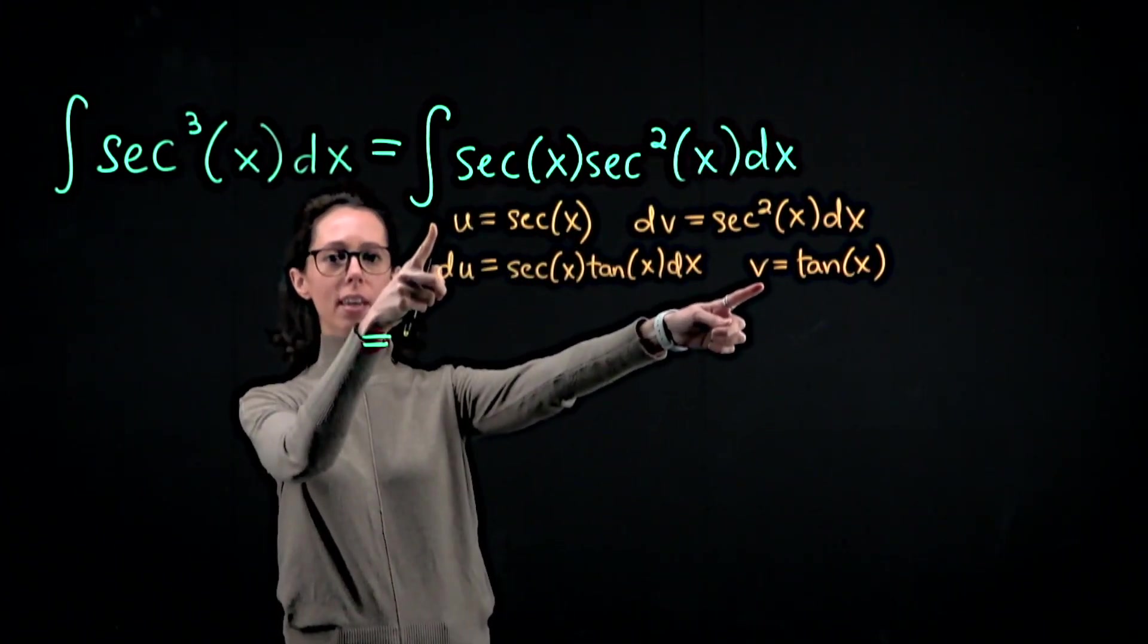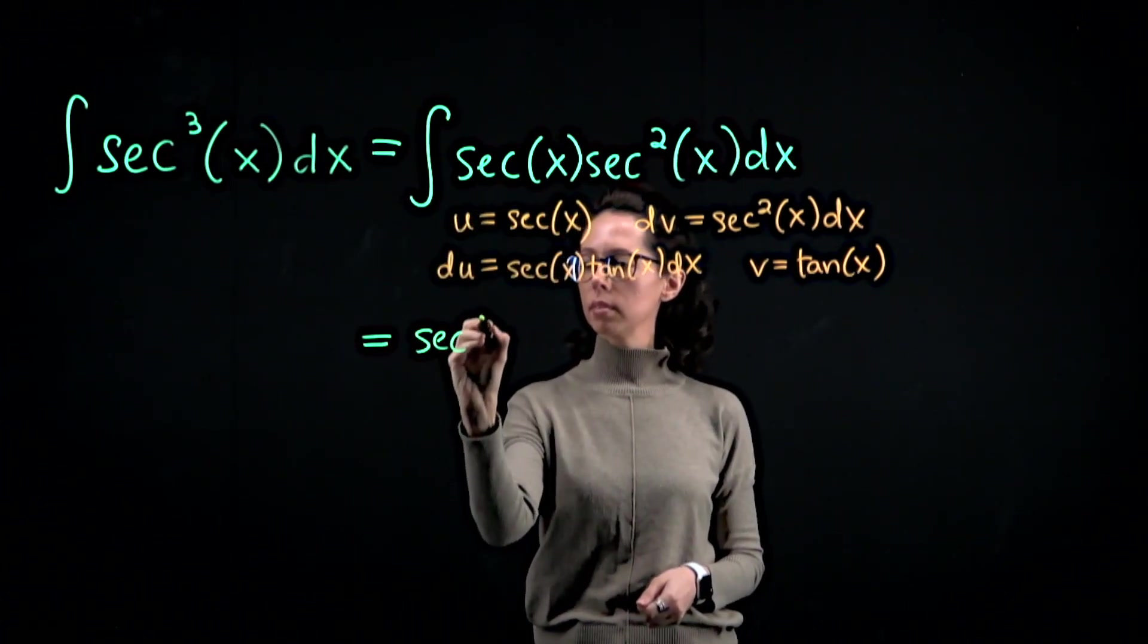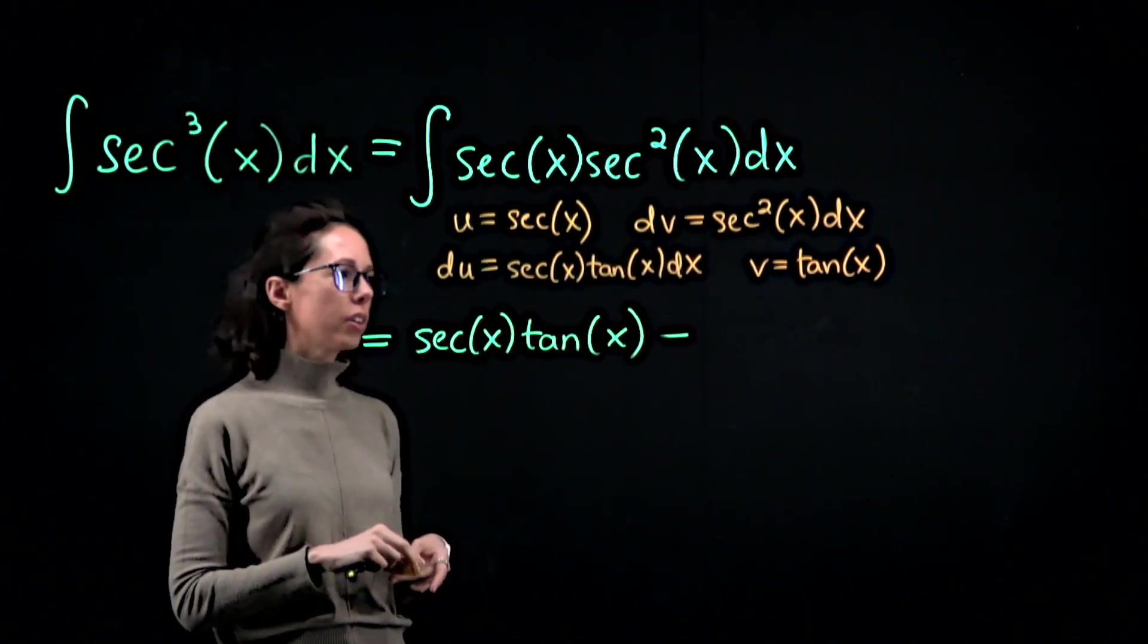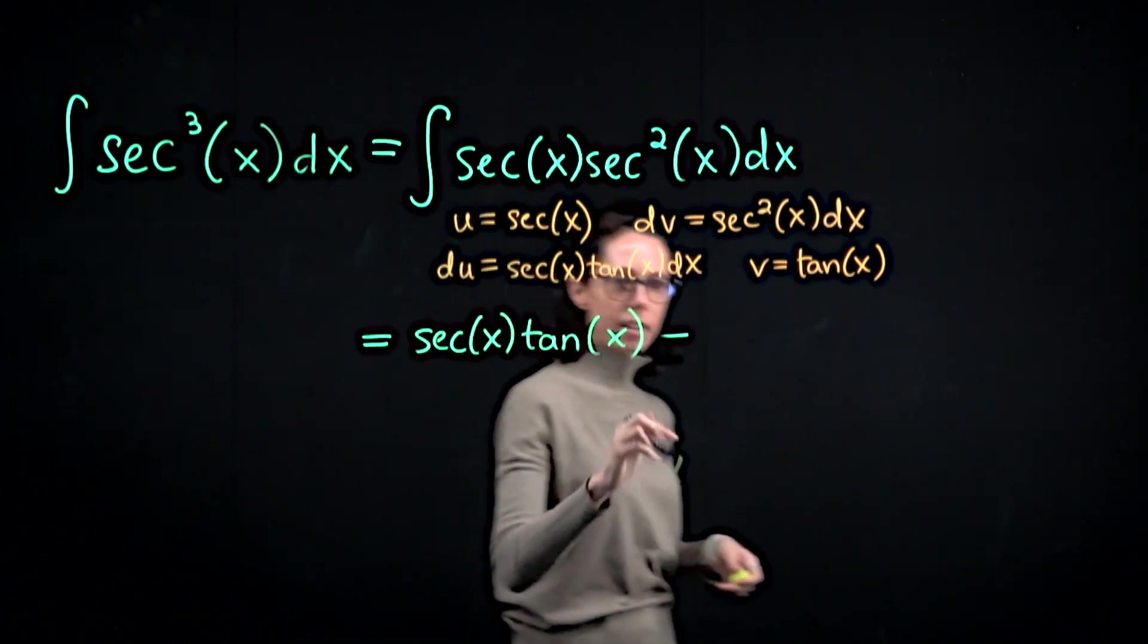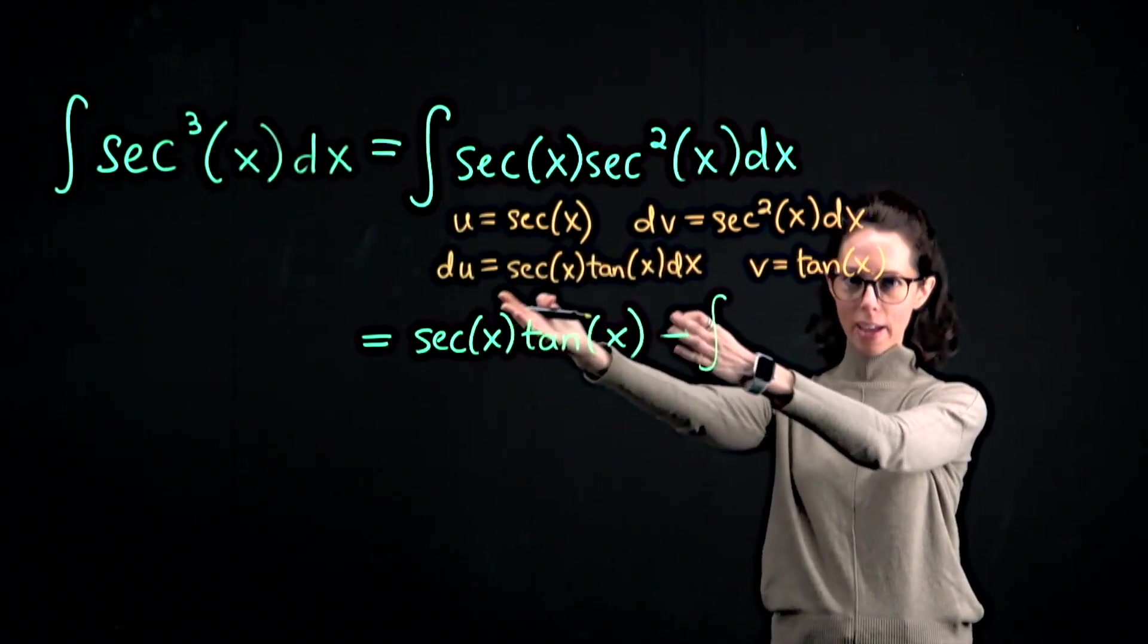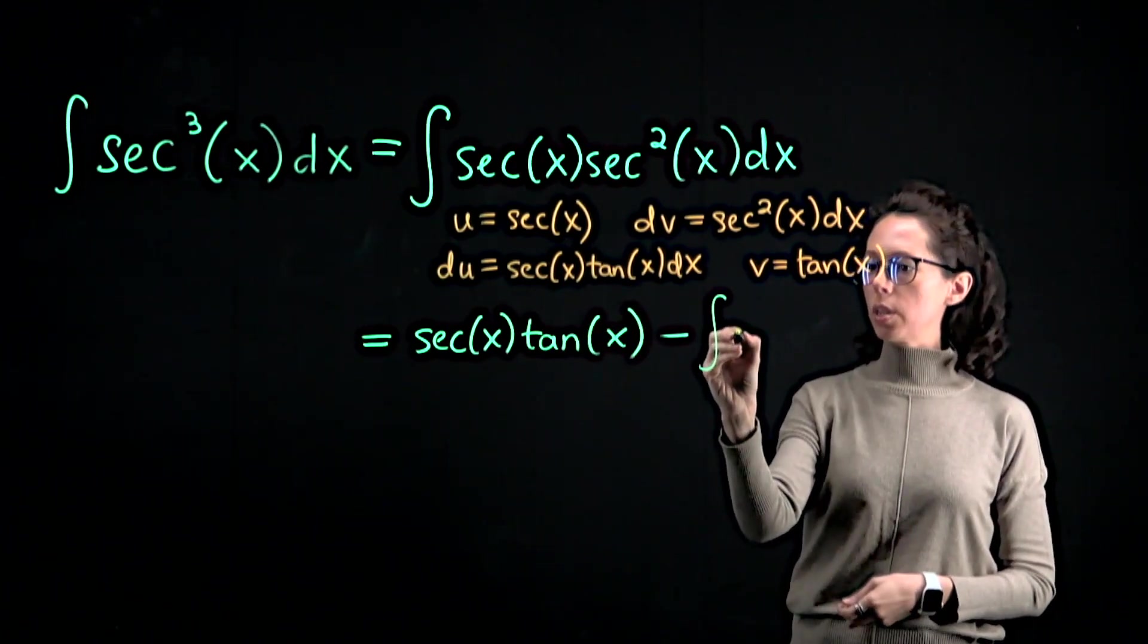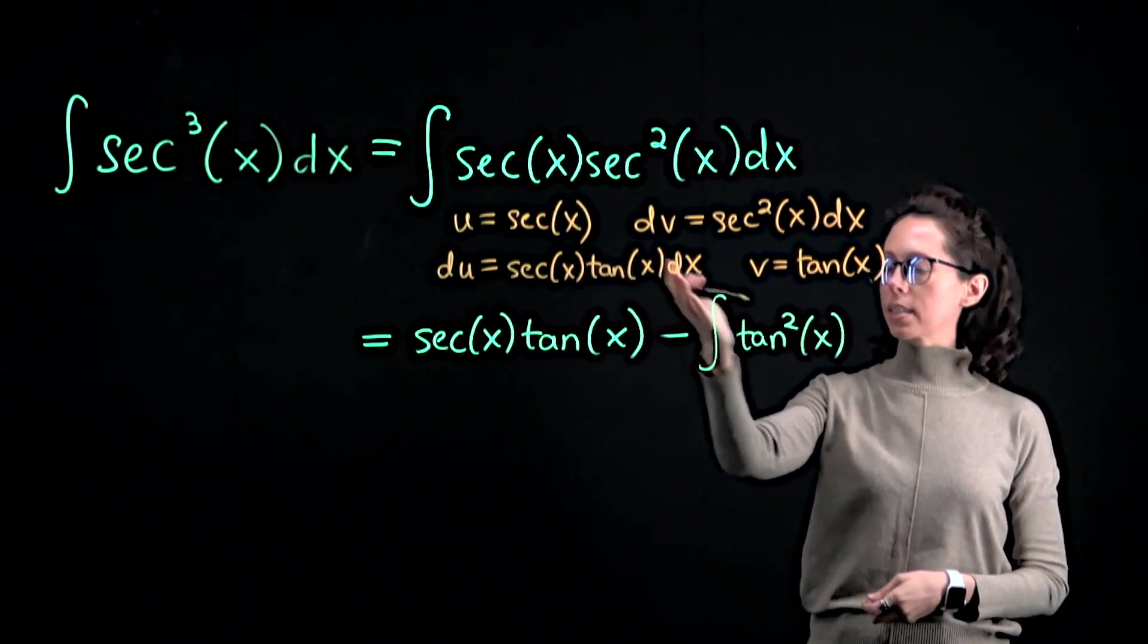...is going to be u times v so that's secant times tangent minus the integral of tan x times secant x tan x dx. So we will do this times that, which becomes the integral that we need to compute. We have two copies of tan here so I'm going to write tan squared with the tangent function squared secant x dx.